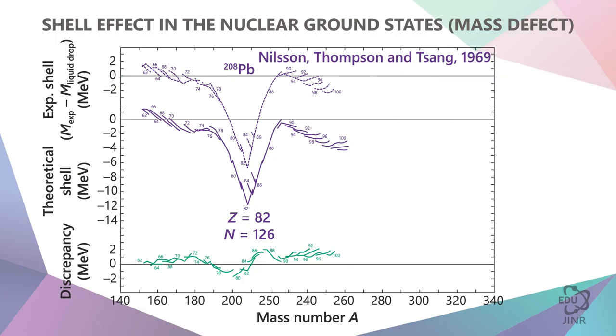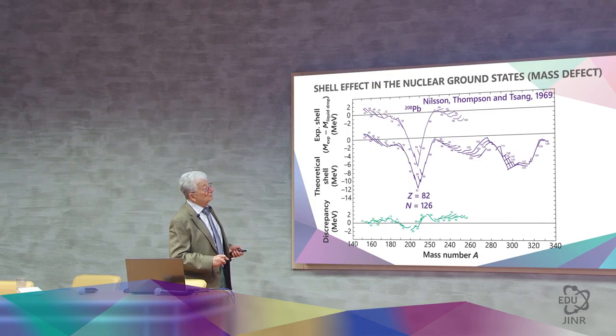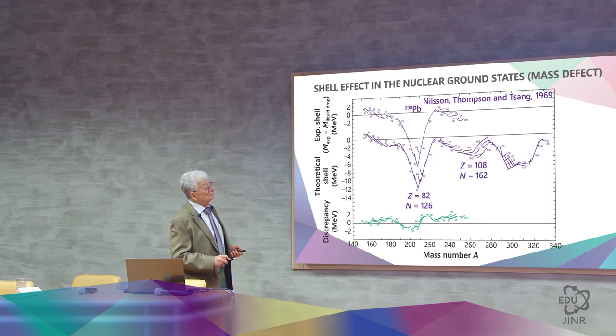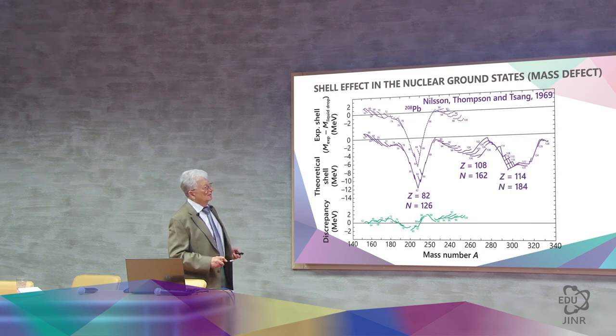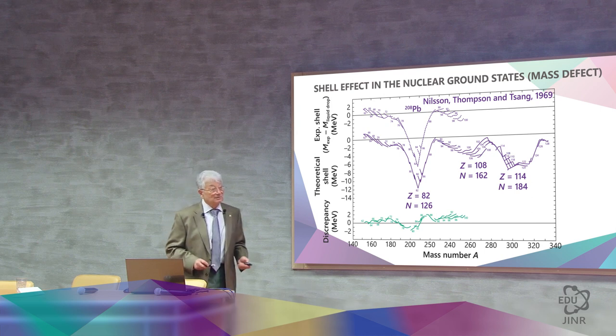Now we will continue this calculation to a zone where there are no elements falling within the liquid drop model. And here we see a decrease, then an increase, and then another decrease. We can expect some increased stability for element 108, which has 162 neutrons. But even greater stability can be expected for element 114, which has a massive amount of neutrons, 184 in total.